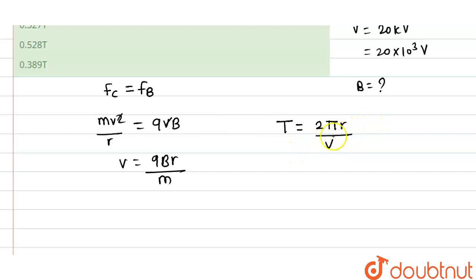So r will get cancelled and T will be equal to 2πm divided by qB.